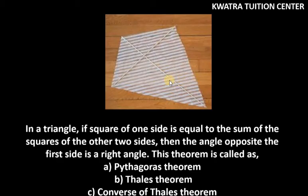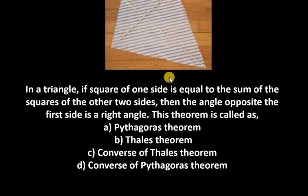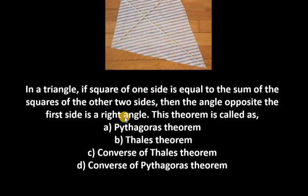The next part says: in a triangle, if the square of one side is equal to the sum of the squares of the other two sides, then the angle opposite to the first side is a right angle. This theorem is called the converse of the Pythagoras theorem.